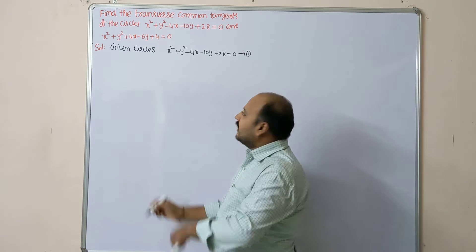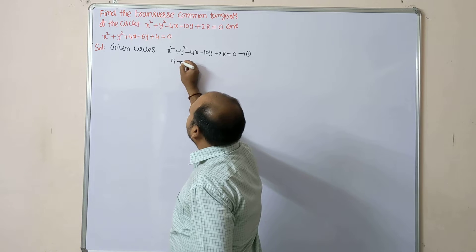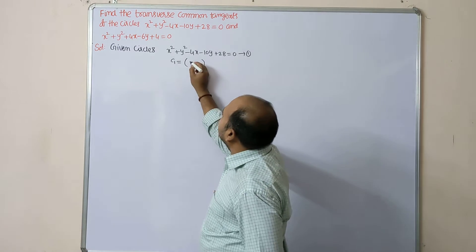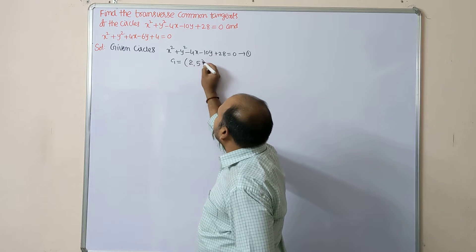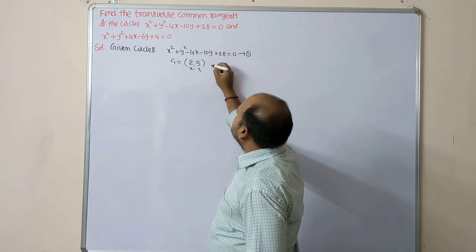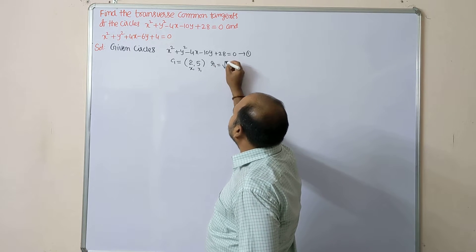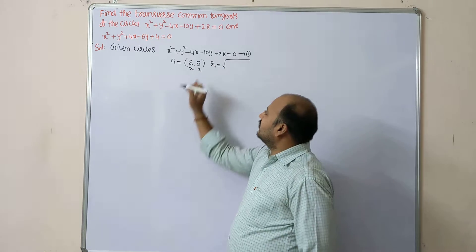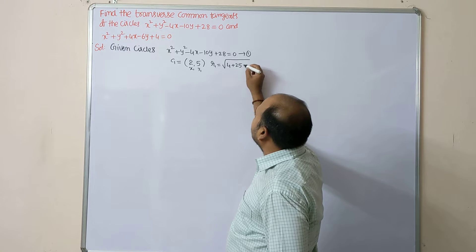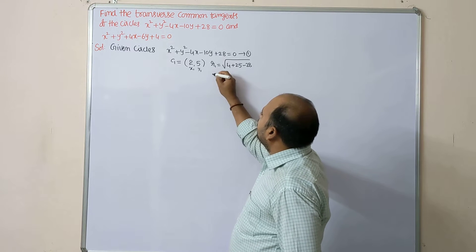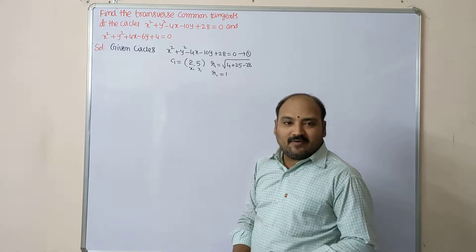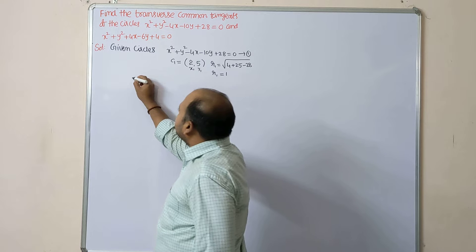First circle: center C1 = (x-coefficient / -2, y-coefficient / -2) = (2, 5), denoted by (x1, y1). Radius of this circle r1 = √(g² + f² - c) = √(4 + 25 - 28) = √1, so r1 = 1.